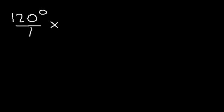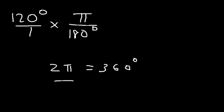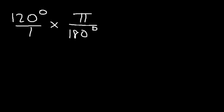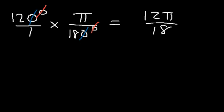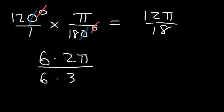Sometimes you need to convert between radians and degrees. To convert degrees to radians, multiply the angle in degrees by pi over 180. Since 2 pi equals 360 degrees, pi equals 180 — that's the conversion factor. For 120 degrees: multiply by pi over 180, the degree symbols cancel, and we get 120 pi over 180. Cancel a zero to get 12 pi over 18. Since 12 is 6 times 2 and 18 is 6 times 3, cancel the 6, giving a final answer of 2 pi over 3.